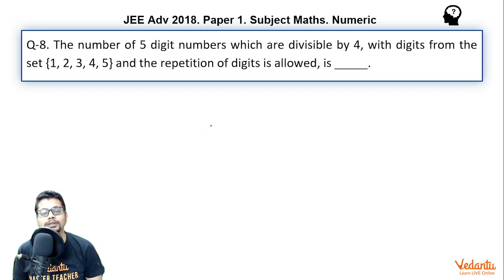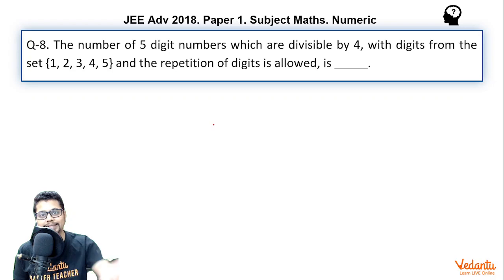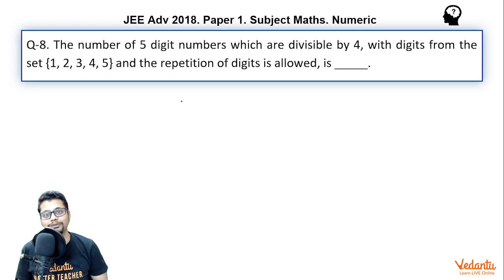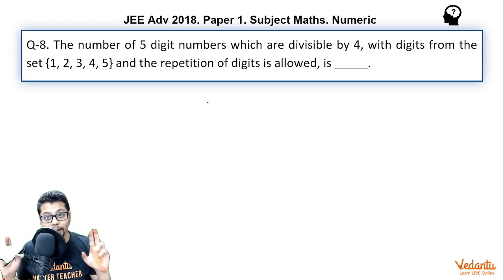Now this is a question from the topic permutation and combination, and this is one of the simplest questions you may ever come across in a JE Advanced exam. Here we would be using the divisibility criteria of 4 — that means the condition by which we can say a given natural number is divisible by 4.